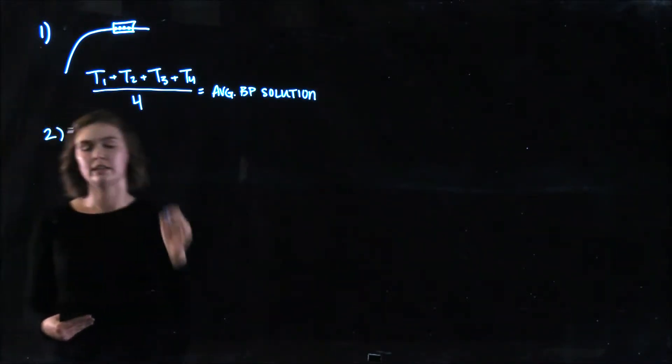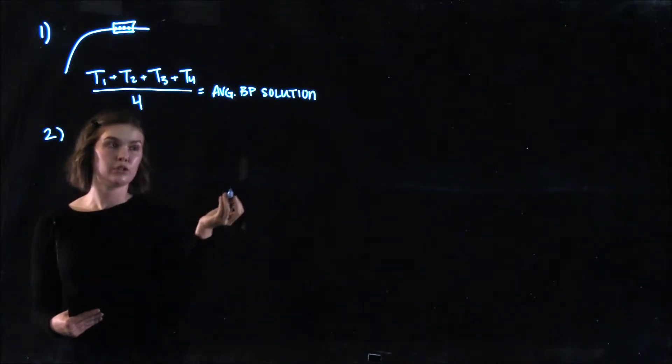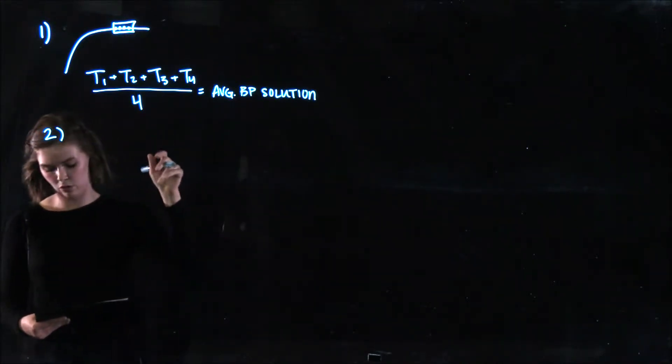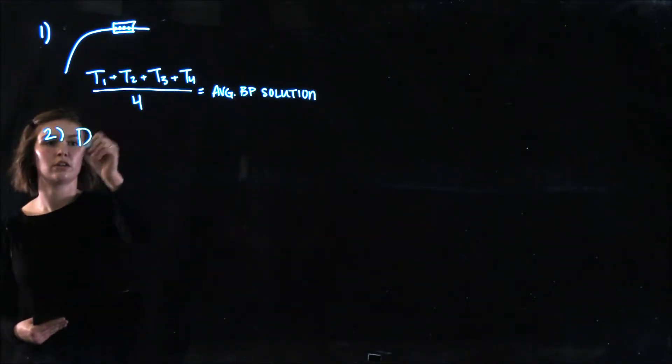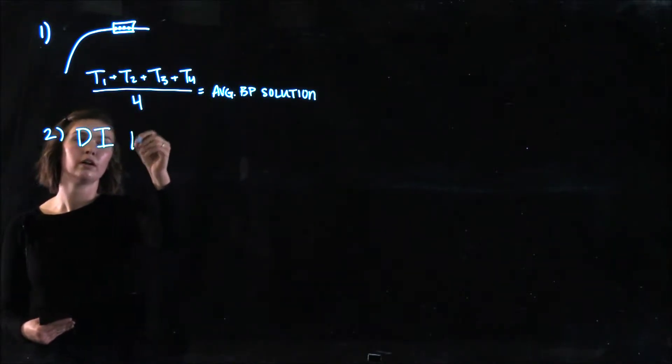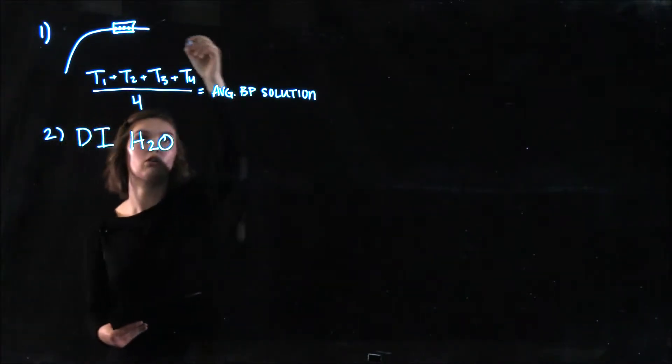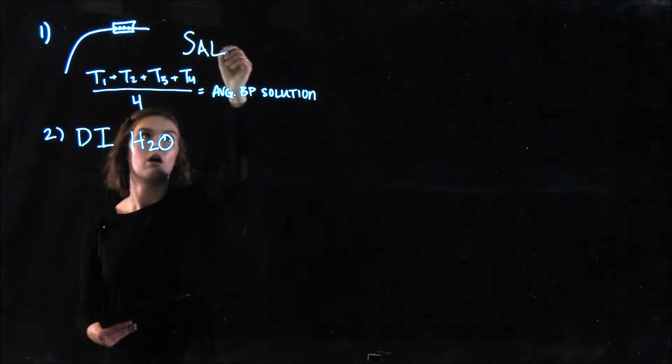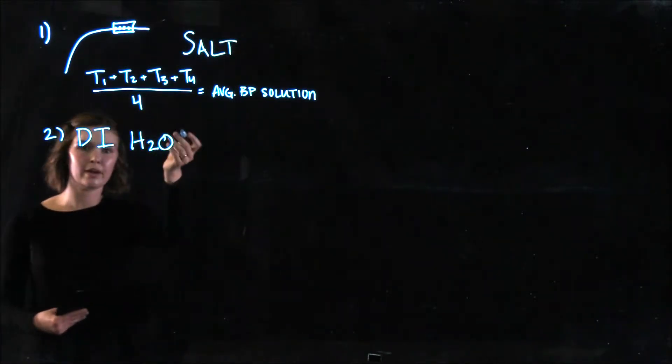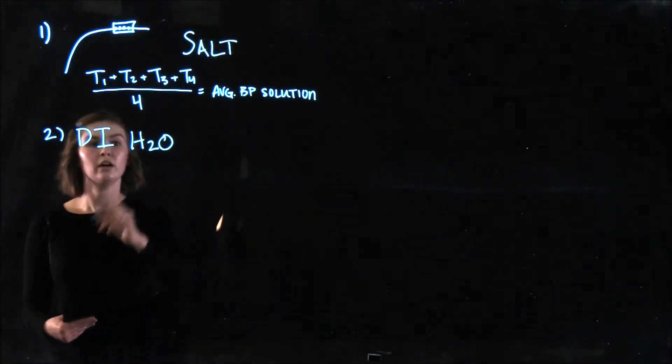The next question is asking what the average boiling point of your water is. So you add distilled water. So this was your salt. And then you're going to do the exact same calculation, average boiling point of your water.